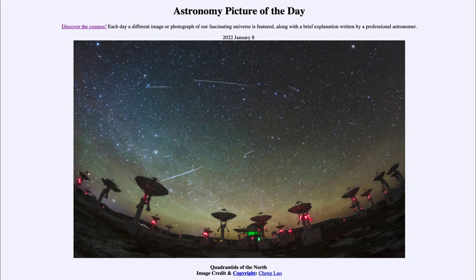One of the interesting things about the Quadrantid meteors is that they do not come from a comet. In fact, it's thought that they come from an asteroid, which is very unusual. Most of the material we see as shooting stars or meteors tends to be traced back to various comets that Earth's orbit happens to intersect. In this case it seems to be an asteroid, and the asteroid must have had some kind of activity — something happened to it that caused material to be pushed off its surface, and it's those little bits of material that we see today.